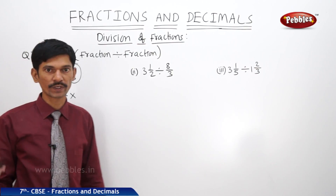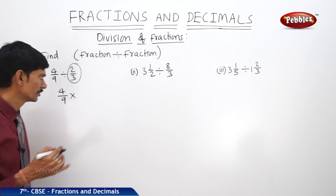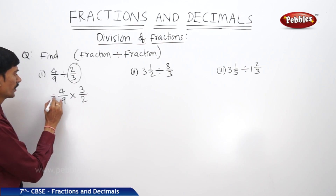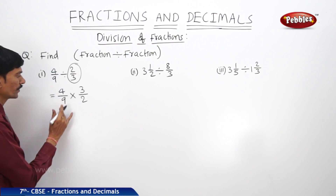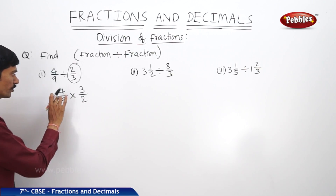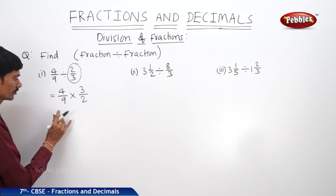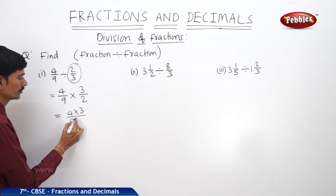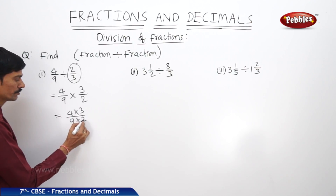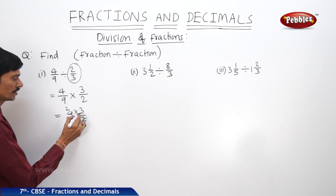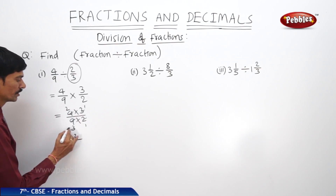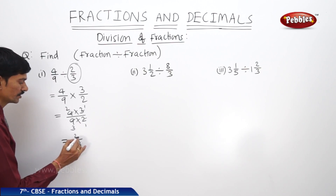The reciprocal of 2/3 is 3/2. So we write 4/9 × 3/2, multiplying both numerators and both denominators: 4×3 / 9×2. We can cancel 4 and 2, and cancel 3 and 9, giving us 2/3. This is a proper fraction.